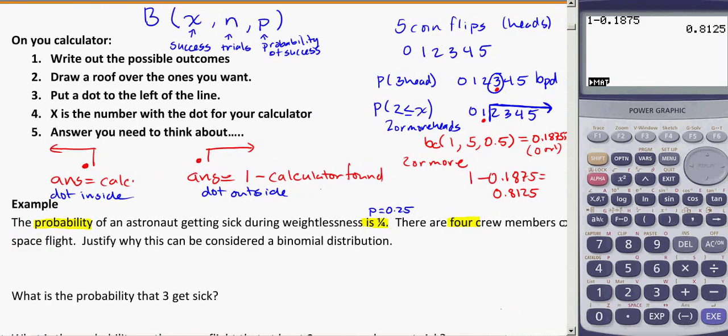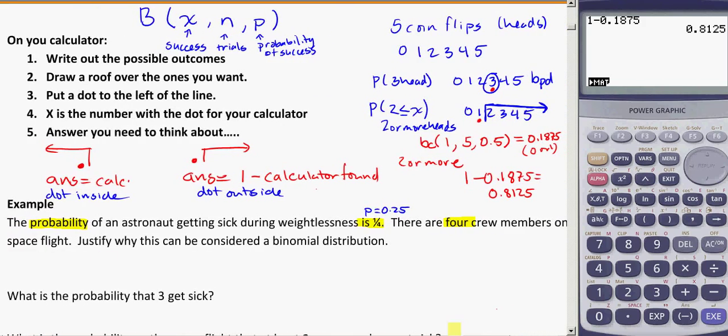I know there are four crew members on a space flight. Justify why this can be considered binomial. So the four crew members, well, I'm not sure what that's going to be yet, but I think that might be my n, my number of trials, but we'll hold off on that until we get to the next part. But I need to justify why this can be considered binomial. So again, for all these problems, you actually have to memorize this, and you'll have to write it out for a higher level answer, or for higher credit on the paper. So justifying it. What are our reasons for being binomial?